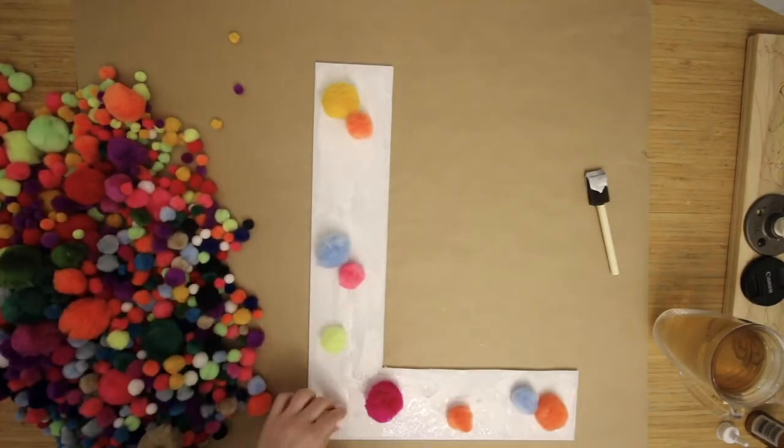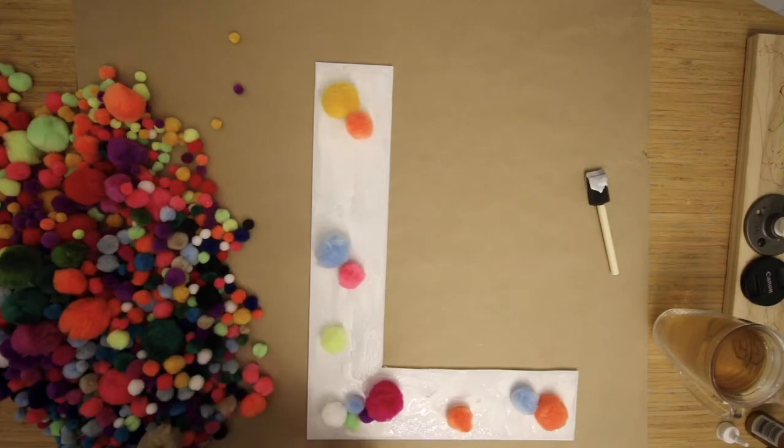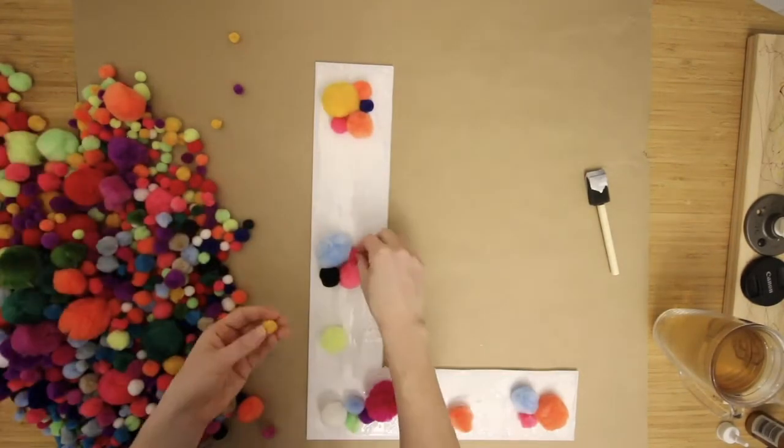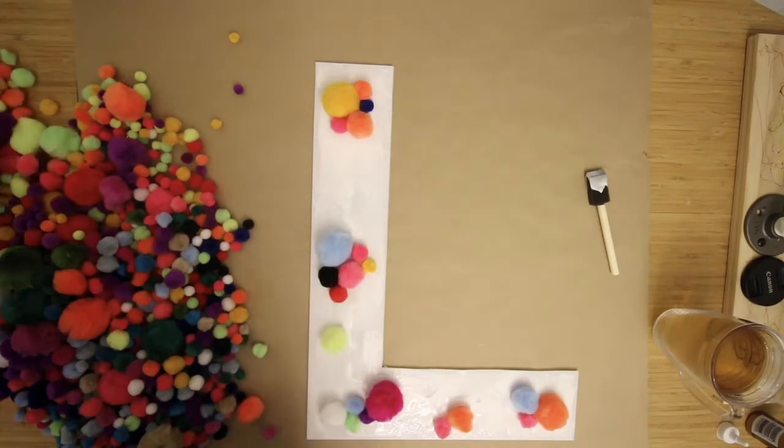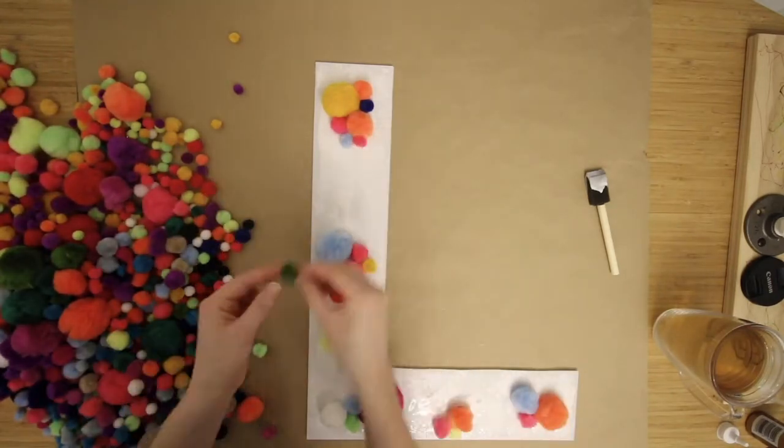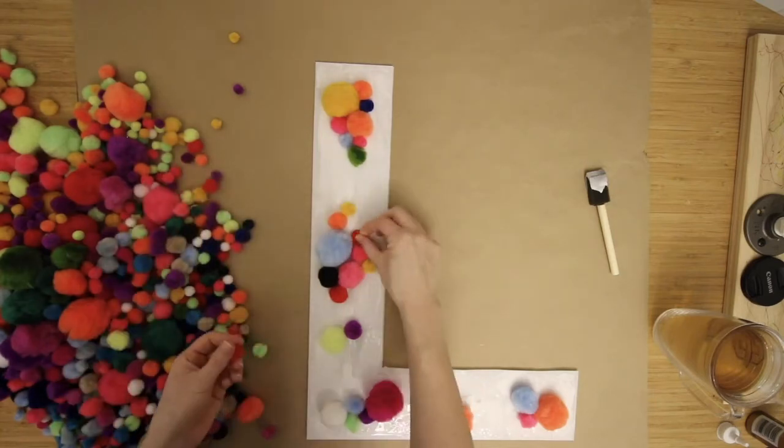Start with your largest pom-poms in your variety pack and put those spread out evenly, then fill around them starting with medium and working your way to small pom-poms. There's no real wrong way to do it—you just don't want there to be gaps, so be prepared to go back and fill in any holes with small ones.